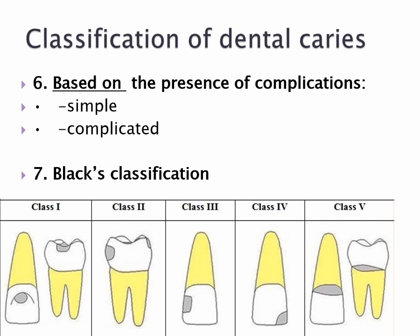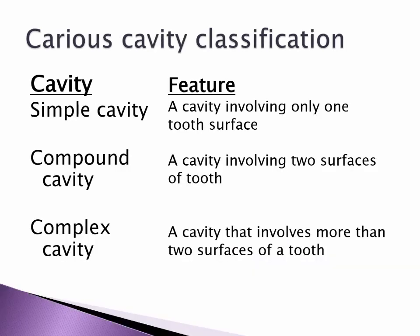7. Black's classification. Cavity types: simple cavity — a cavity involving only one tooth surface; compound cavity — a cavity involving two surfaces of a tooth; complex cavity — a cavity that involves more than two surfaces of a tooth.